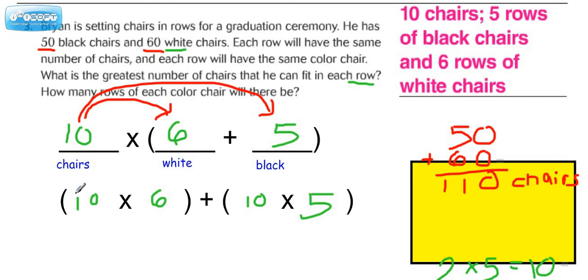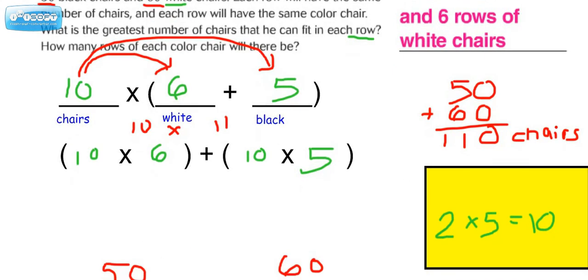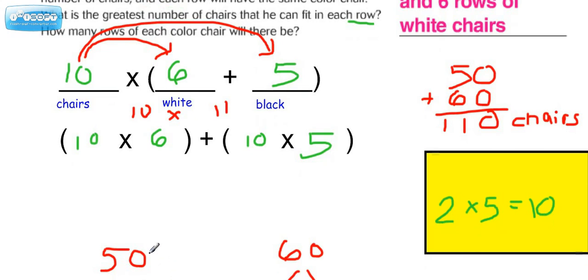So 10 would still represent the rows of chairs, 6 would still represent the white, and 5 would still represent the black. Now it's always a good idea to just follow order of operations because recall that we had 110 chairs when we added up the numbers. We should probably make sure that it still adds up to be the same thing. If we do this plus this, we get 11, and 10 times 11 is still 110 chairs. So we have a match there confirming that we did it correctly. So again, we use distributive property here to answer this question, and GCF.